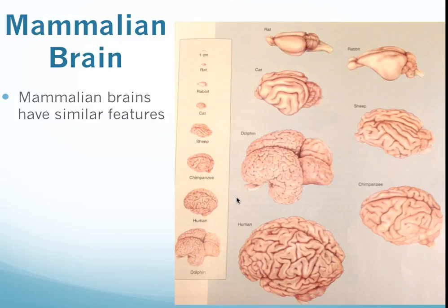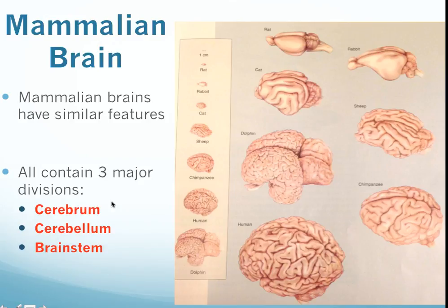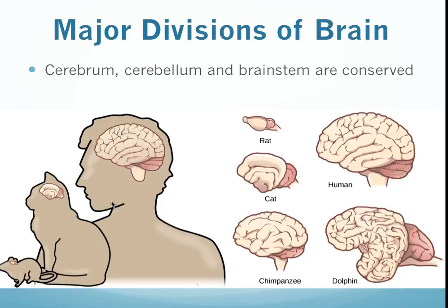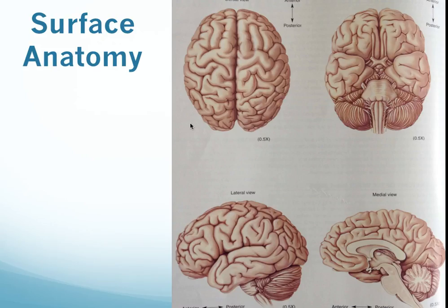One of the neat things we can note is that across all mammalian species — from a rat all the way through sheep, dolphin, and human — we have a very similar layout and similar structure. Looking at the big picture, we have conservation of three key structures: the cerebrum, the cerebellum, and the brainstem. These three major structures do different things, they're all important, and they do work together. But we also have localization of function — even though all these sections communicate and form synapses, they each do their own stuff.